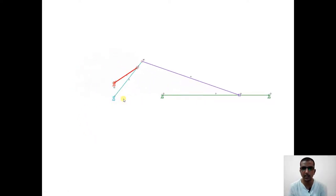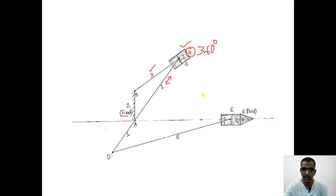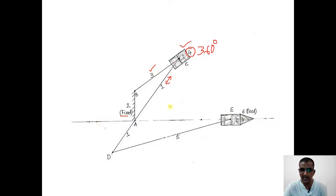Now let's look at the construction. This is the second inversion of a slider crank mechanism where link number two is the fixed link. There is link three, to which link number four — the slider — is attached. The slider can move back and forth through link one and can complete 360-degree rotation. The slider rotates by sliding through link number one.